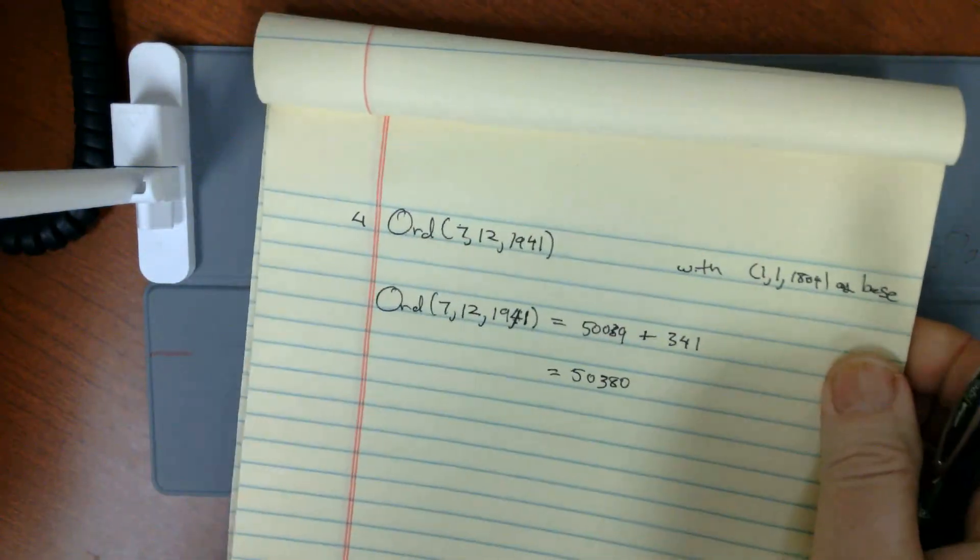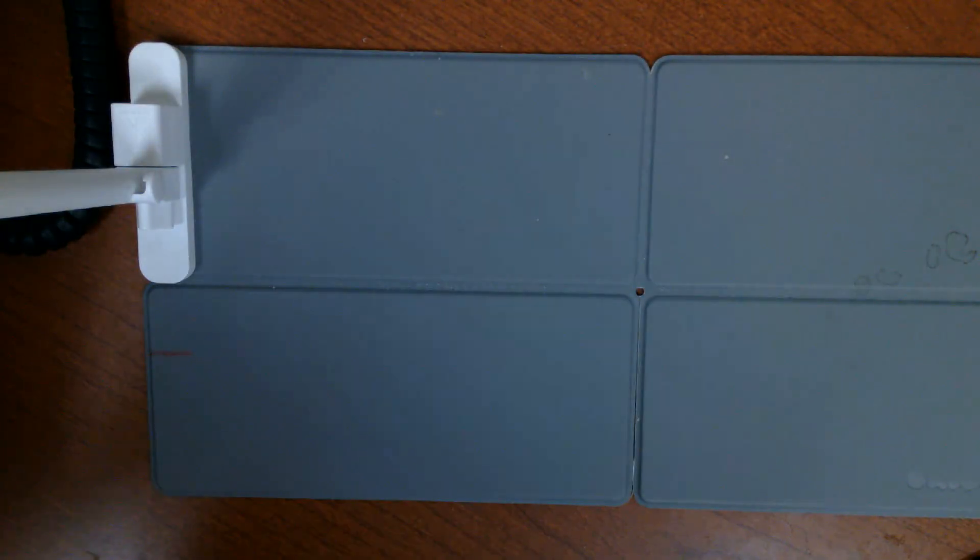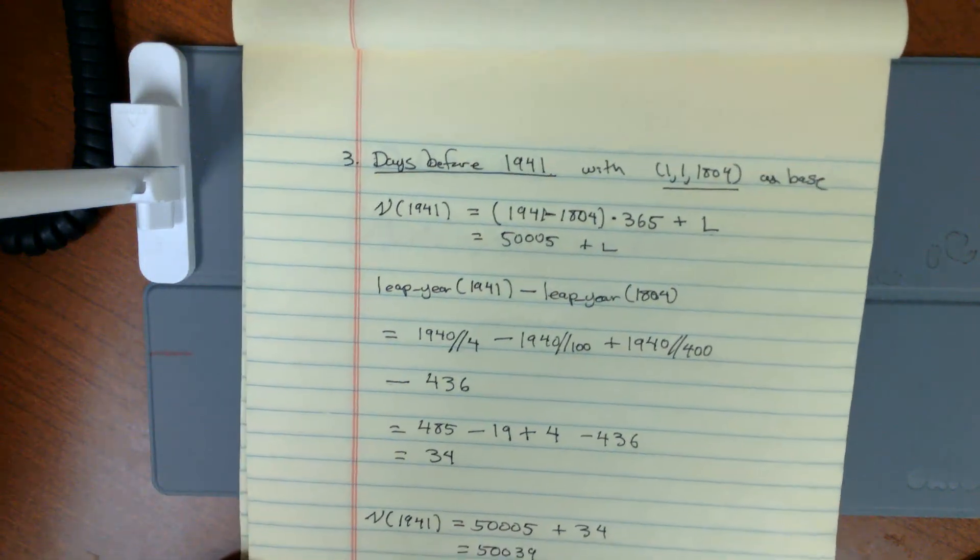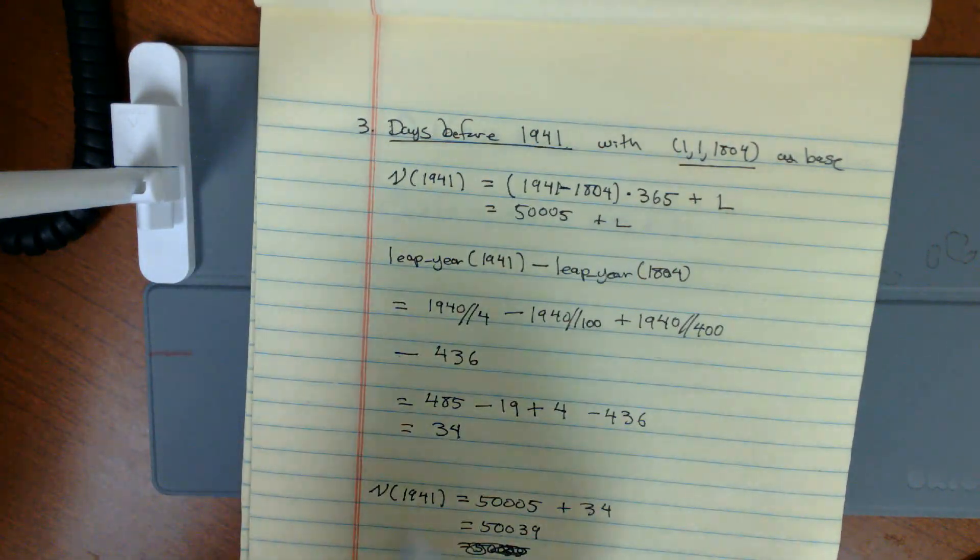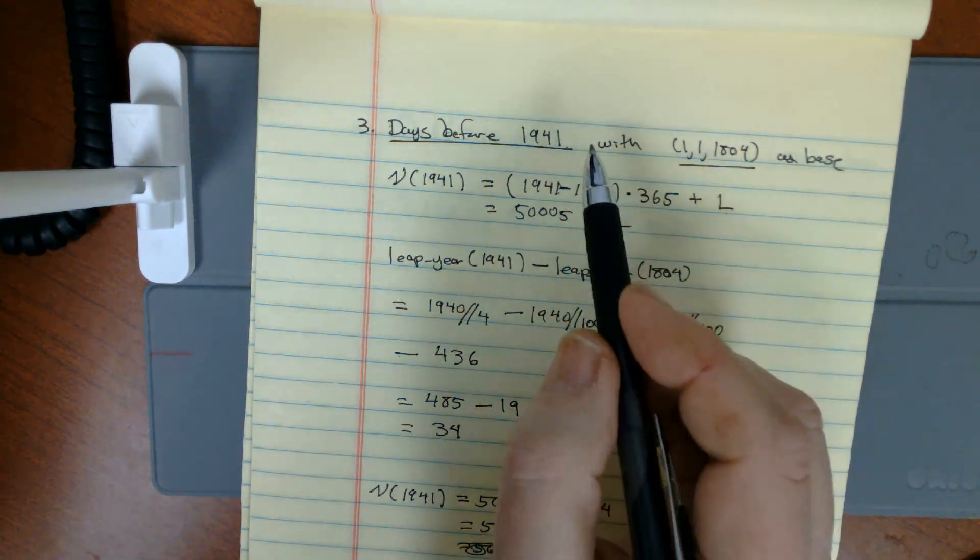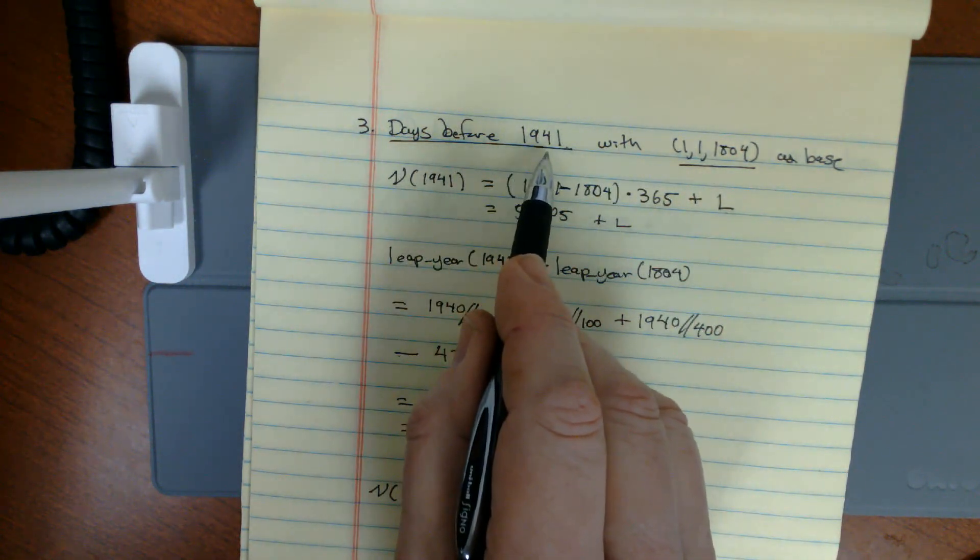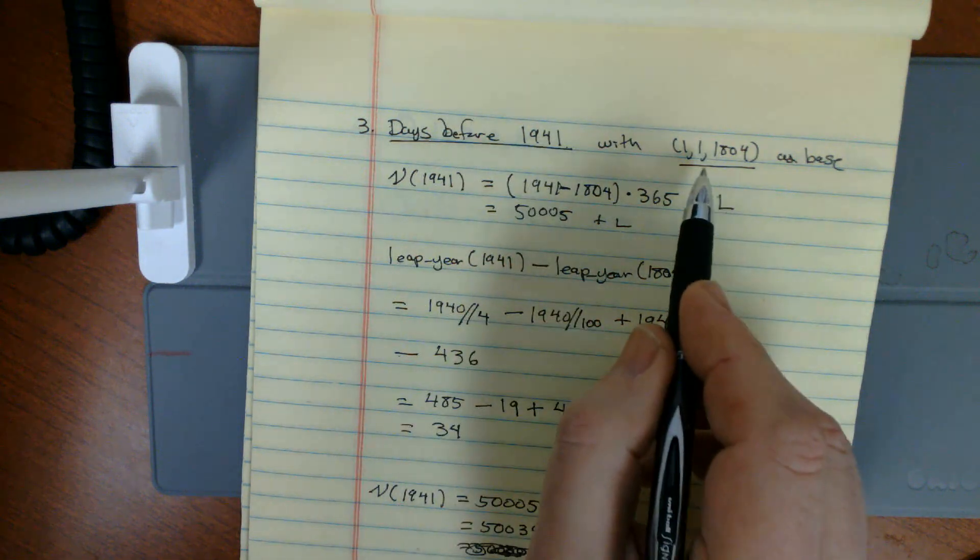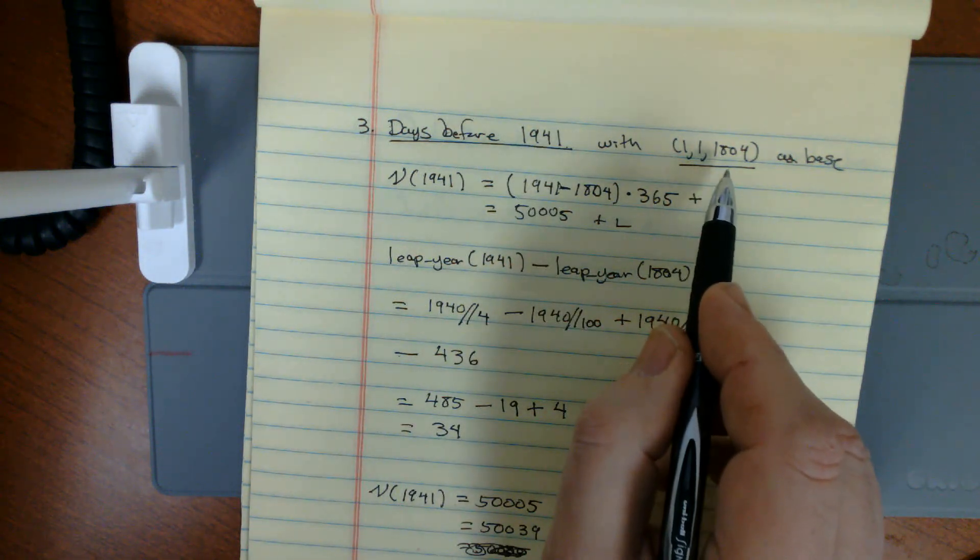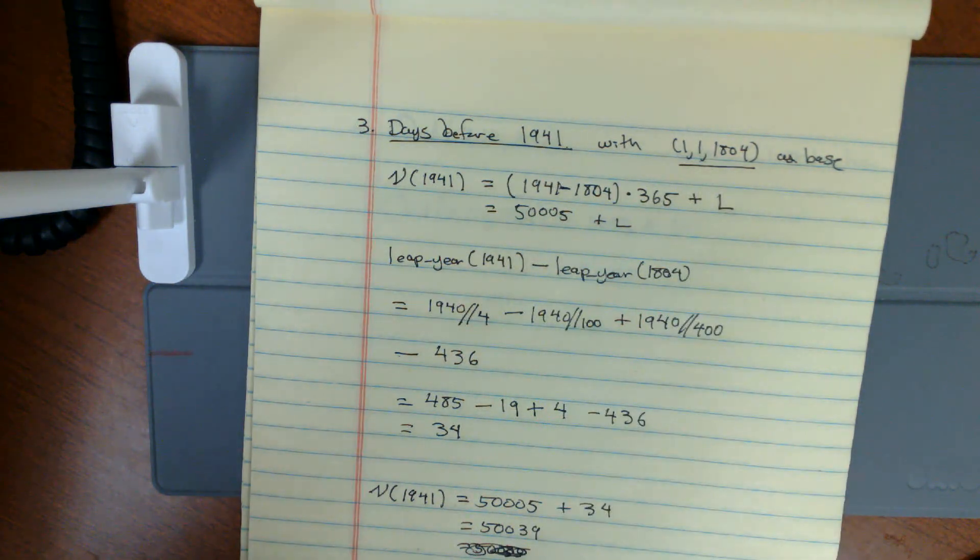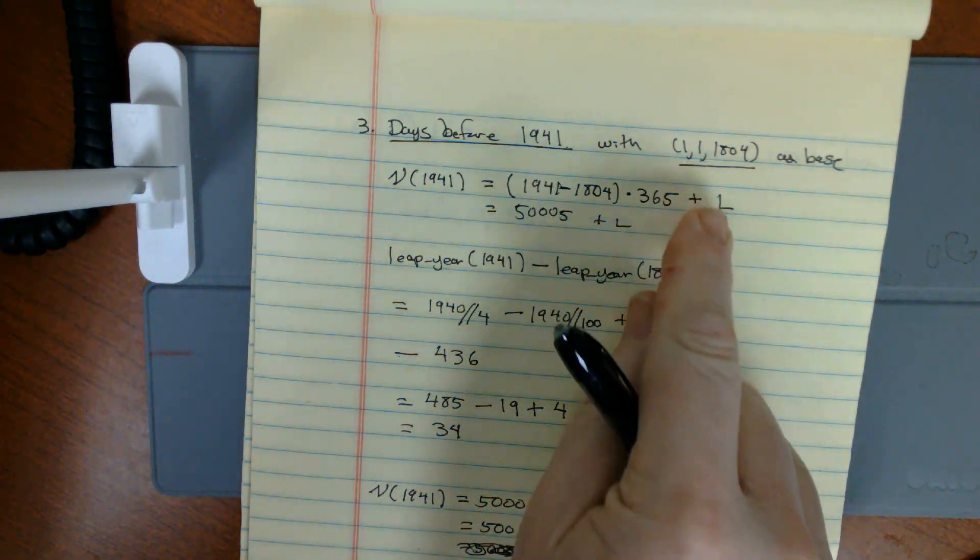Let's skip the page. So here on this page, we calculate the number of days that occur on our calendar before 1941. Back to the base date, we're basing it at the 1st of January, 1804.